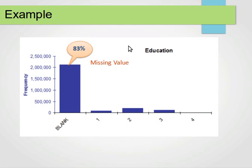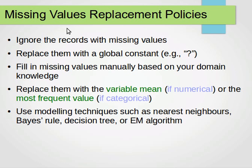This is just an example: data about education frequency, where blank records or blank fields can make up to more than 80% of the data. That is a real problem if you have that many missing values.